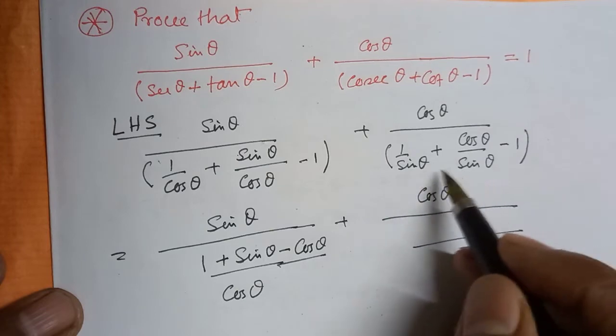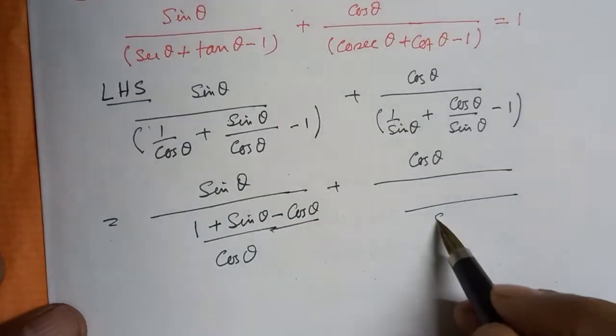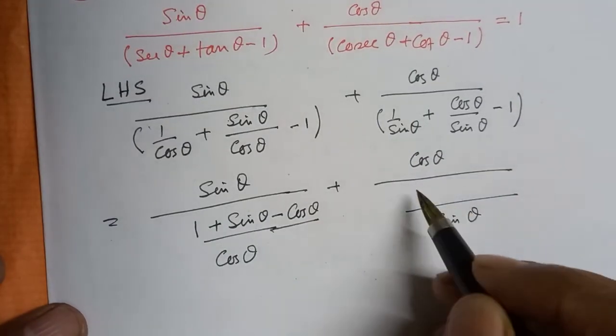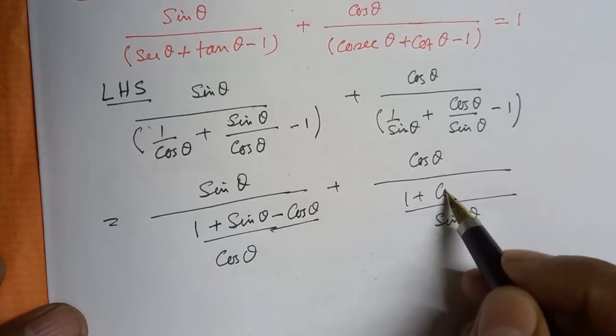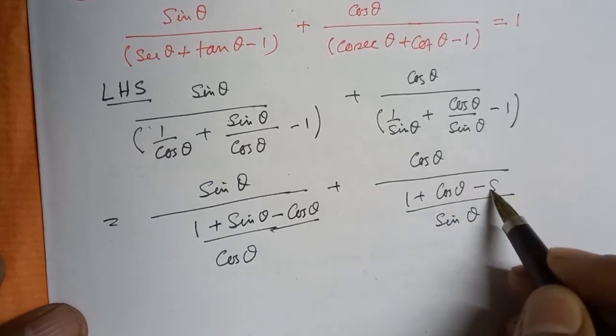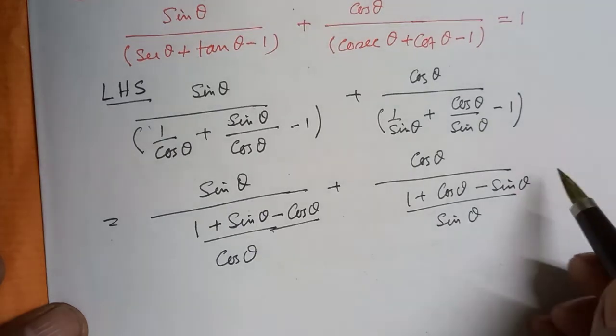The second term: cosθ divided by (1/sinθ + cosθ/sinθ - 1). Taking LCM as sinθ gives cosθ divided by (1 + cosθ - sinθ)/sinθ.